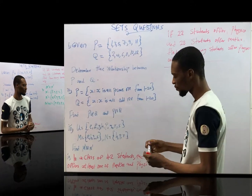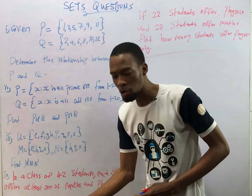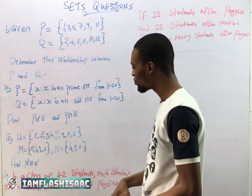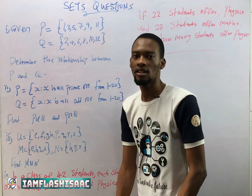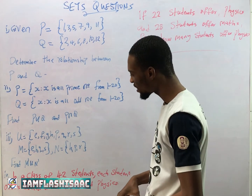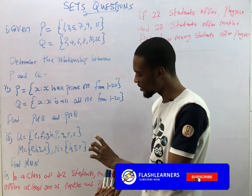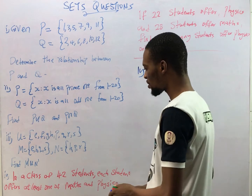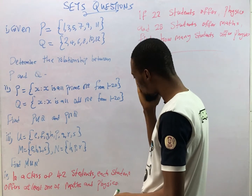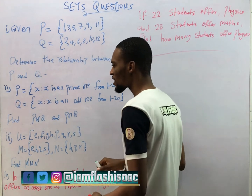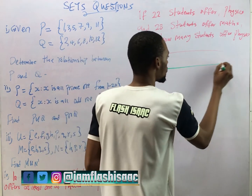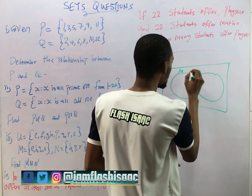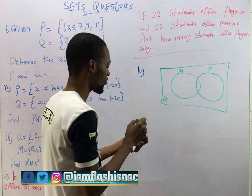Question 4 is a type you'll keep seeing for two sets and three sets — you must learn this. It says: in a class of 42 students, each student offers at least one of Math and Physics. This requires a Venn diagram. Since we are dealing with two sets, draw the Venn diagram first. 22 students offer Physics and 28 students offer Math.